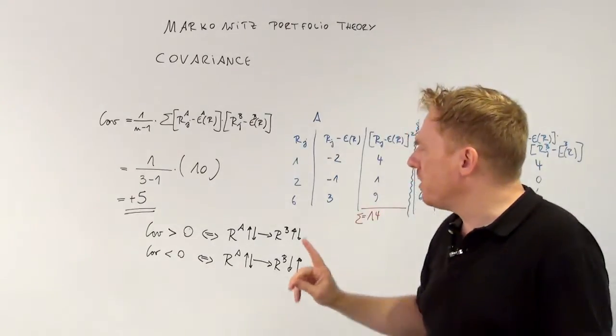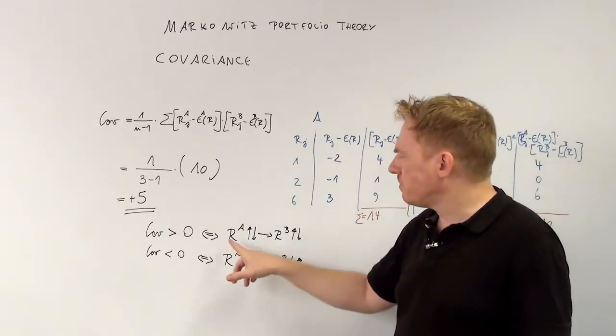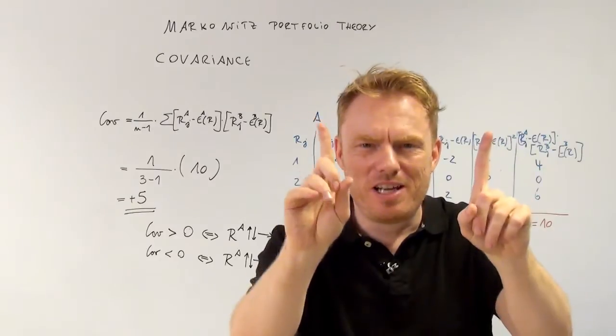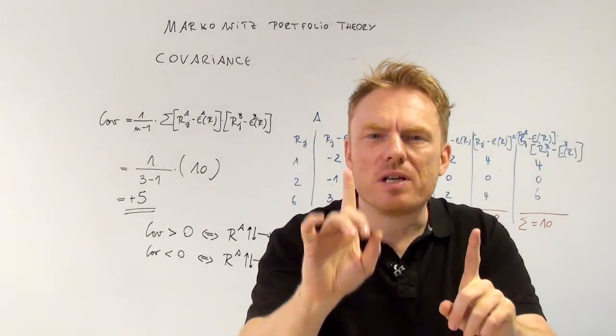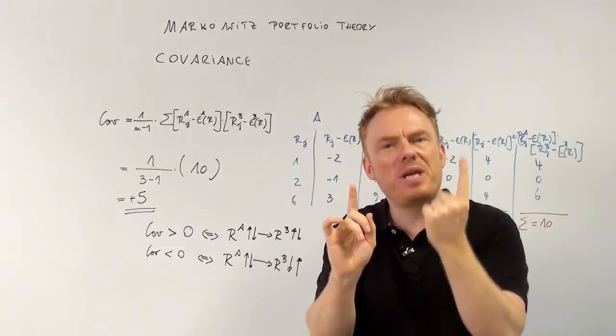Because if it is positive, the following holds true. If the covariance is strictly superior to 0, then we have this. If the return of share A rises, so does the return of share B.